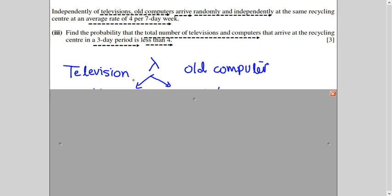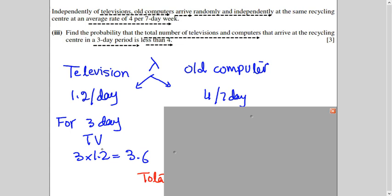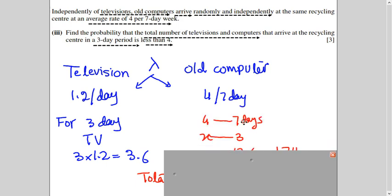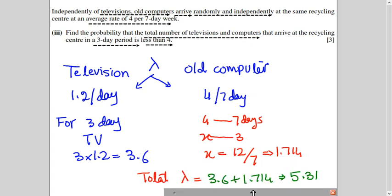The rate of televisions is 1.2 per day and for old computers it is 4 per 7 days. We have to change both to 3 days. For televisions: 1.2 × 3 = 3.6. For old computers: 4 per 7 days gives 4/7 × 3 = 1.714 for 3 days. Because the question asks for the total number of televisions and computers, we add these two lambda values. So the combined lambda is 5.31 for a 3-day period, and I have to calculate the probability for less than 4.